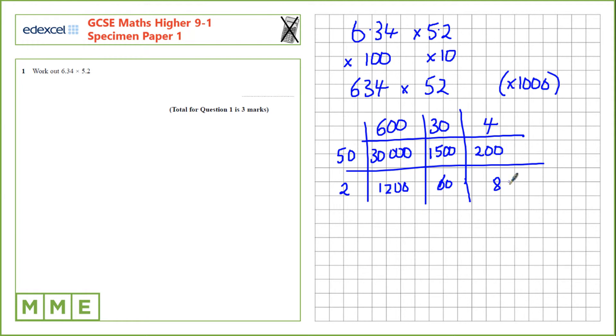For the last step we need to add all of these values within the grid up. So 30,000 plus 1,500 plus 200 plus 1,200 plus 60 plus 8. And that gives a total of 32,968.